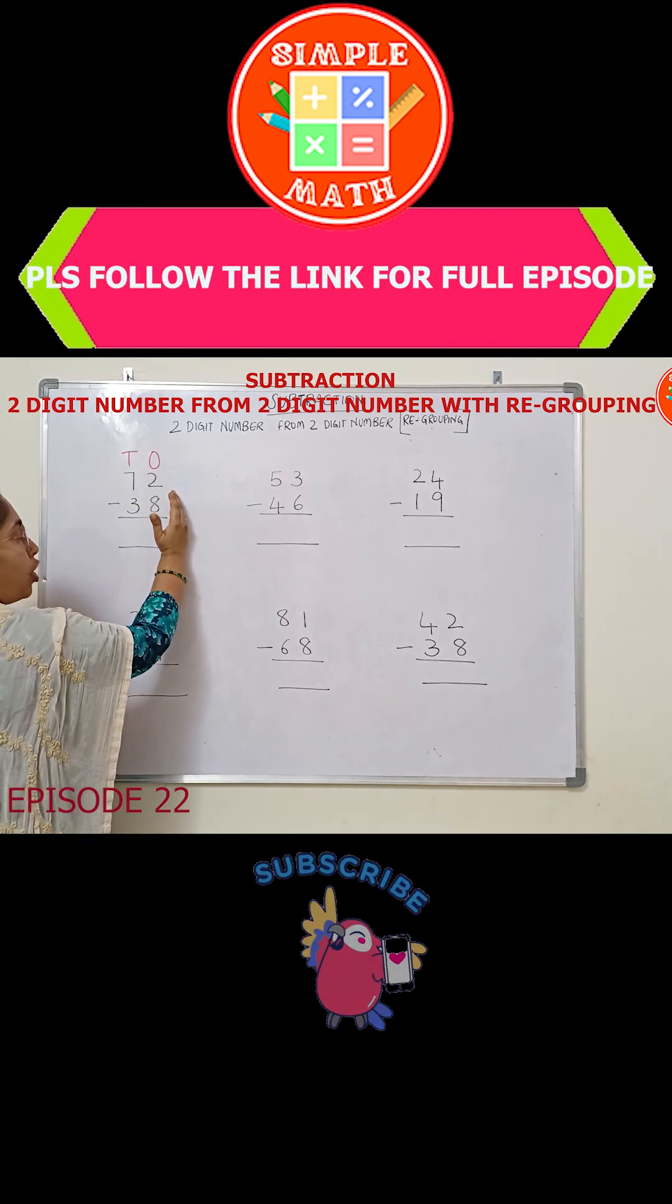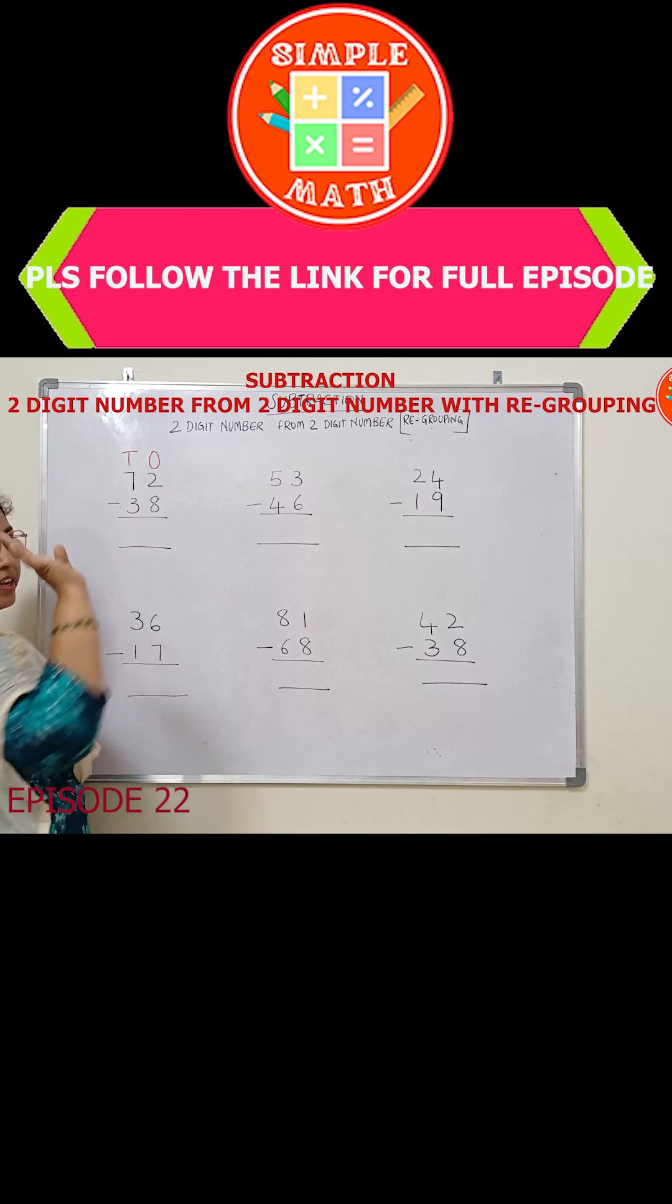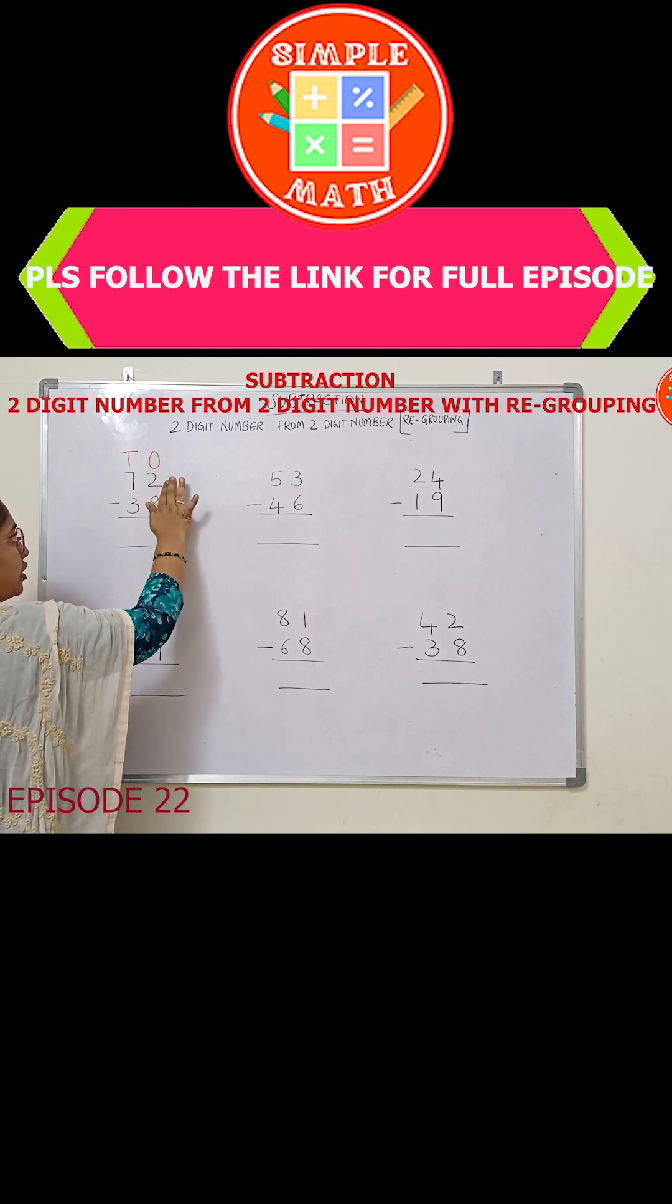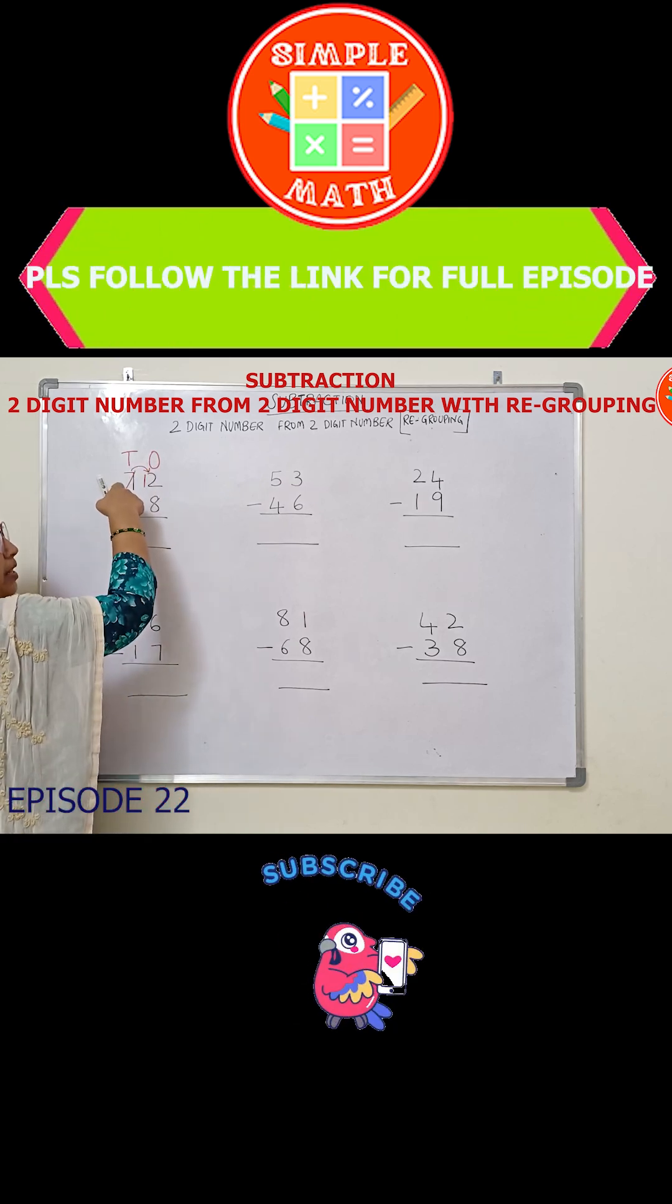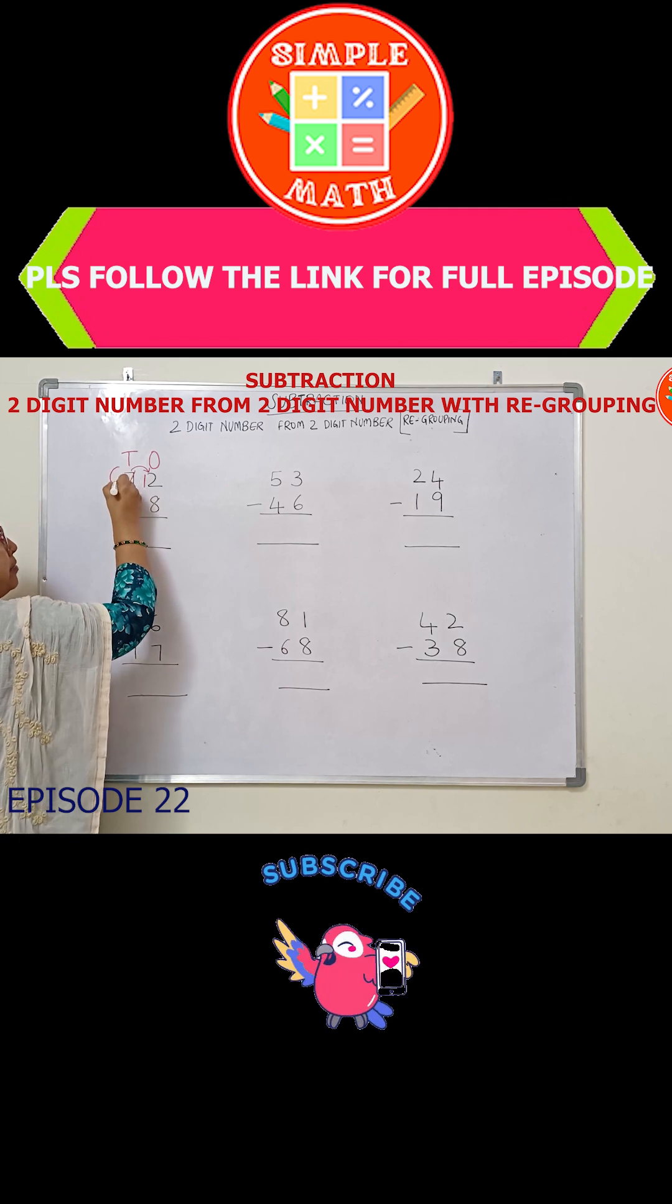We start subtraction from the ones column because two is smaller and eight is bigger. We borrow one ten from the tens column. The number becomes twelve and immediately you have to write the new number here. This number becomes six.